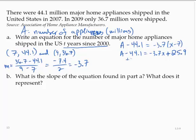And adding the 44.1 to both sides, A would equal negative 3.7x plus 70.